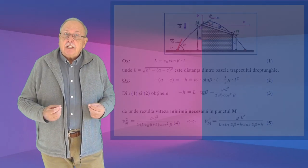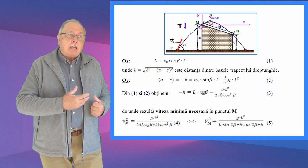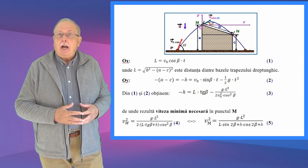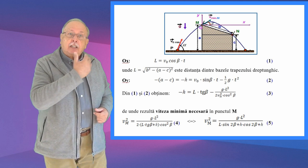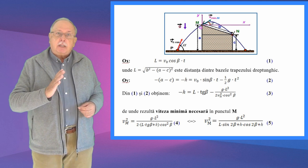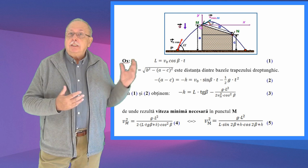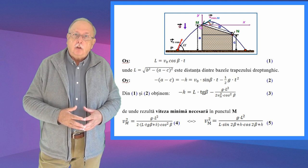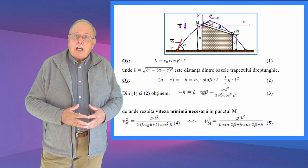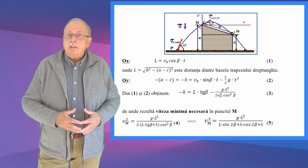Vom calcula întâi cu ce viteză minimă notată VM trebuie să ajungă piatra în punctul M, punctul cel mai înalt al acoperișului, aflat la înălțimea A mic de sol, astfel încât să treacă și peste punctul M. Această viteză minimă corespunde unui anumit unghi pe care viteza din acel moment trebuie să-l facă cu orizontala — notat cu beta. Alegem un sistem de axe ortogonale XOY cu originea în punctul M, așa cum vedeți în desen.